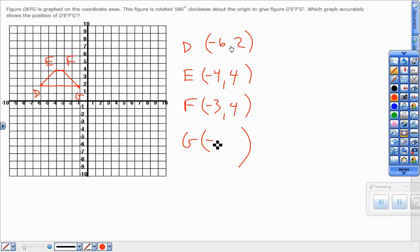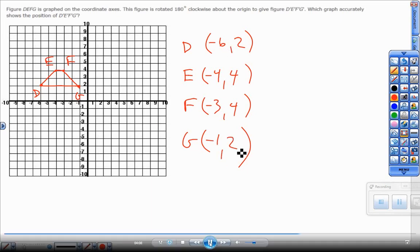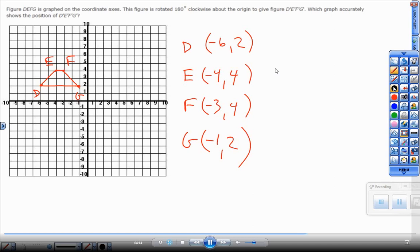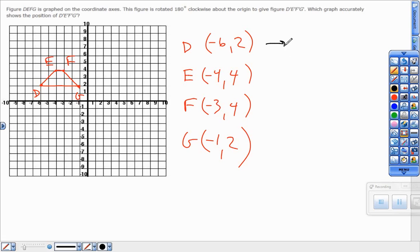So again, quarter turn: flip the points around. But a half turn, 180: leave the points alone but just opposite them. So again, if I was doing a quarter turn to the right, I would have flipped this around and made the right one negative. Quarter turn to the left, I would have flipped this around and made the left one negative. But a half turn, I'm going to leave the negative 6 and 2 alone.